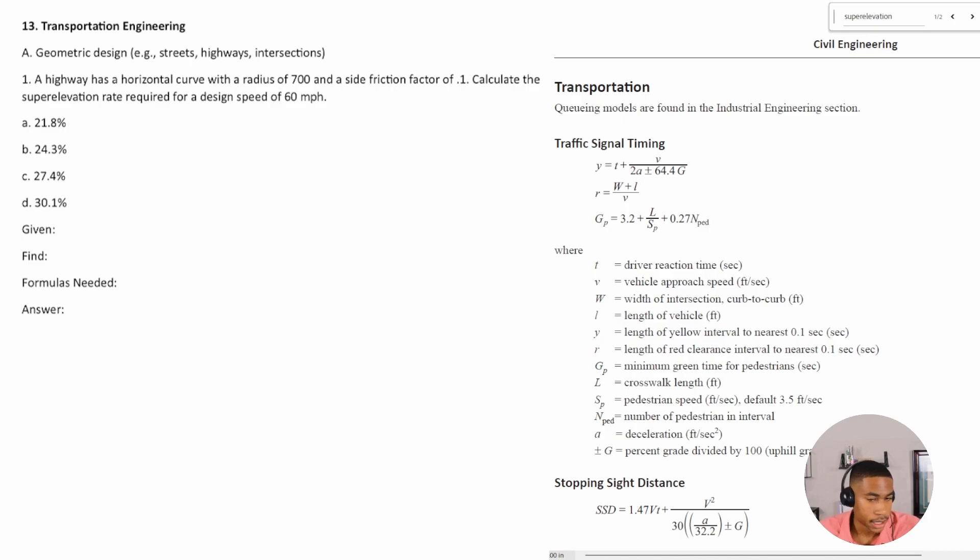Number one says: A highway has a horizontal curve with a radius of 700 and a side friction factor of 0.1. Calculate the super elevation rate required for a design speed of 60 miles per hour.